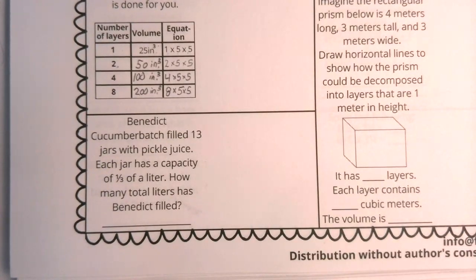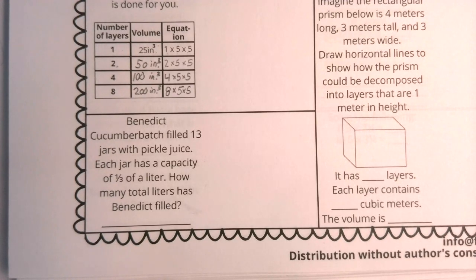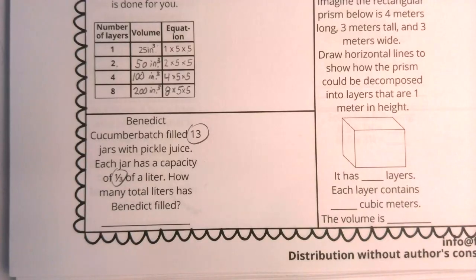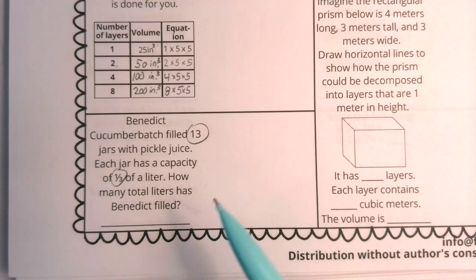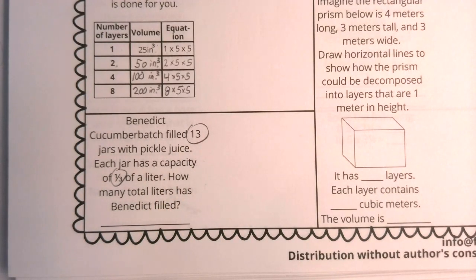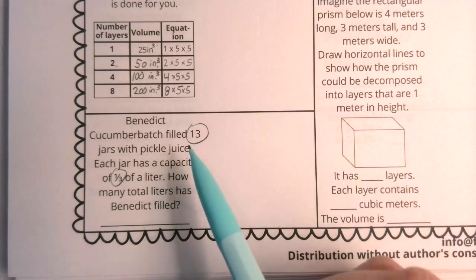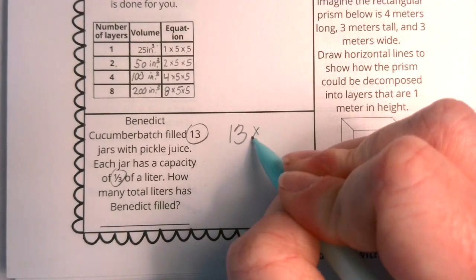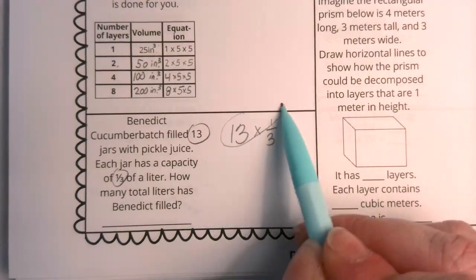Let's do our very last question for Monday. Benedict cucumber batch filled 13 jars with pickle juice. Each jar has a capacity of one third of a liter. How many total liters has Benedict filled? Well, let's think about this problem again. I always tell my students we need to read it one time just for understanding, then read it another time to actually analyze our numbers. So Benedict cucumber batch filled jars. And how many jars did he fill? Well, he filled 13. Each jar was filled to capacity. And what was the capacity? Well, it was a third of a liter. But we want to know how many total liters he had among 13 jars all filled to this amount. So yes, what will we need to do? Multiply. We're going to take our 13 jars that were all filled to this capacity. We're going to multiply that together.